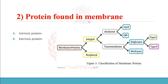Proteins found in the membrane: as studied in the fluid mosaic model, the plasma membrane has two types of protein — intrinsic and extrinsic protein. Intrinsic proteins are also known as integral proteins; extrinsic proteins are also known as peripheral proteins. Intrinsic or integral proteins are of two types: anchored and transmembrane. Anchored proteins are again of two types: lipid-anchored and GPI. Transmembrane proteins are of two types: single-pass and multi-pass. Single-pass proteins are again of two types: type 1 and type 2.